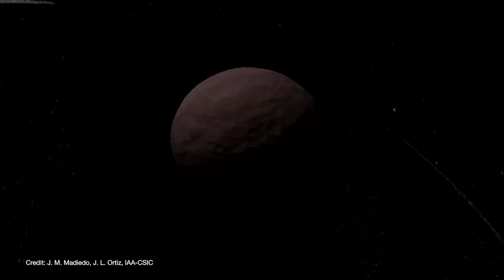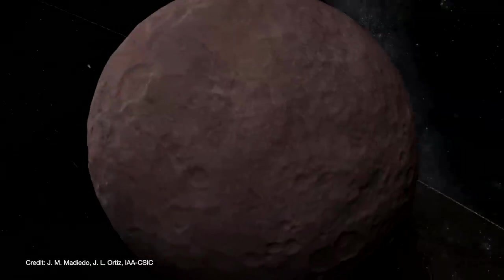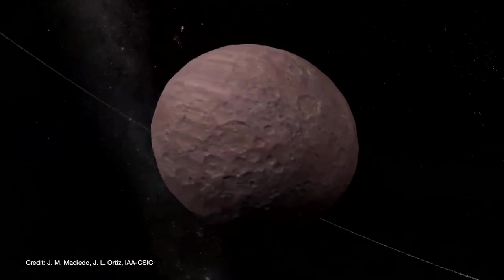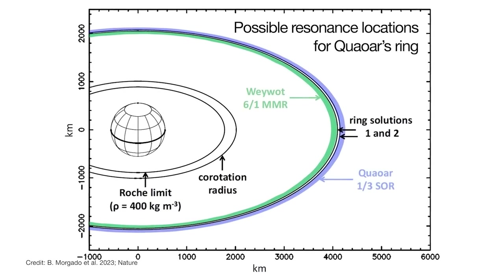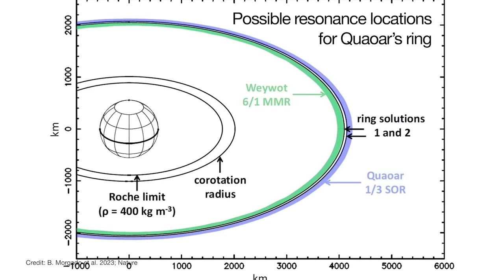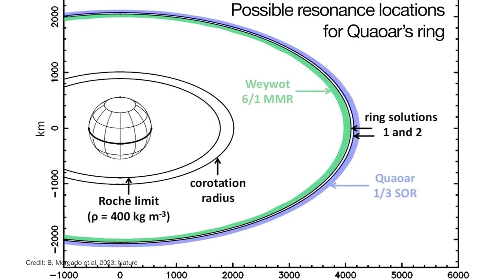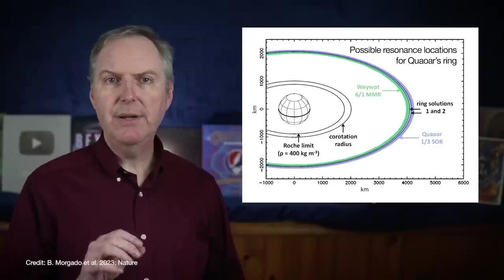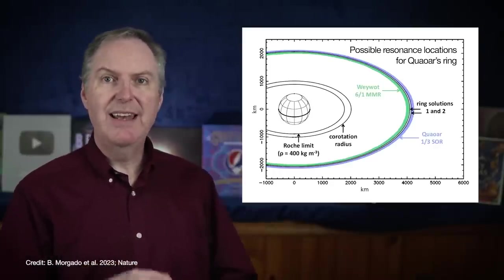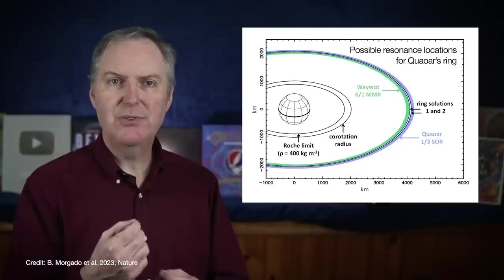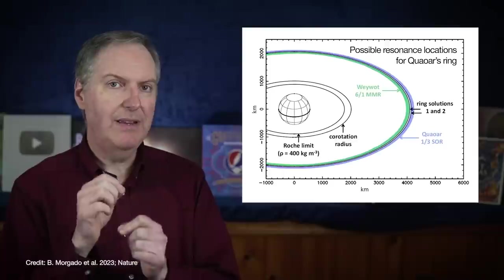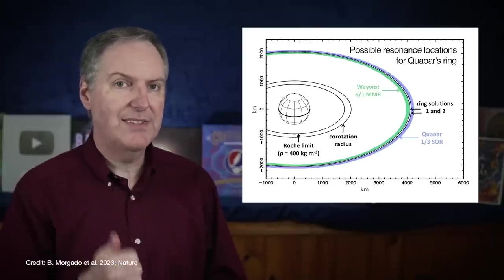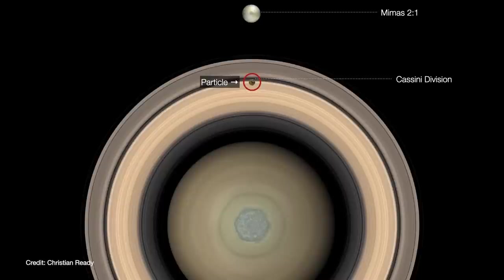And right now it's not clear how you can get such a dense ring to remain stable outside the Roche limit. Any external perturbations should cause the ring to clump up in places which would lead to accretion, which would form a moon. But there are some possible clues here. One is that the ring may be located near two possible regions where the particles can enter into one of two resonances with either Quaoar or the moon Weywot. Resonances are periodic alignments between celestial bodies such that they exert regular periodic gravitational tugs on each other at repeating intervals. Because the alignment always repeats when the bodies return to the same point in the orbit, the gravitational tug is always in the same direction.